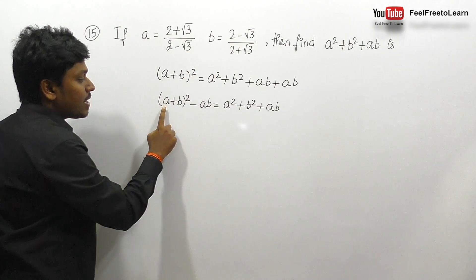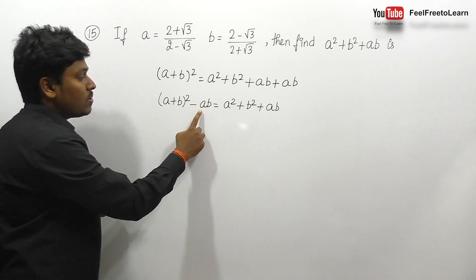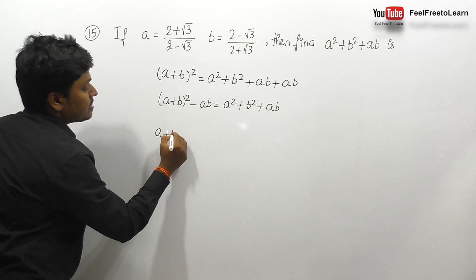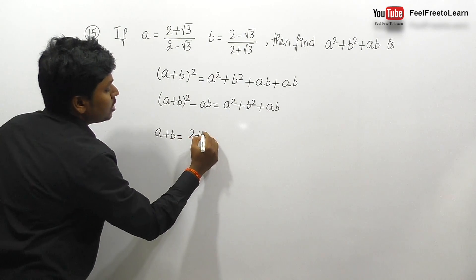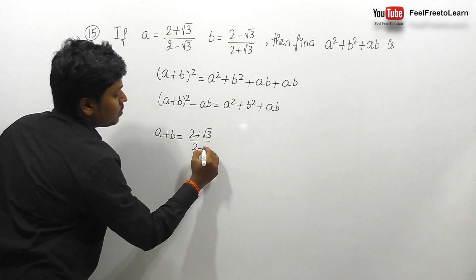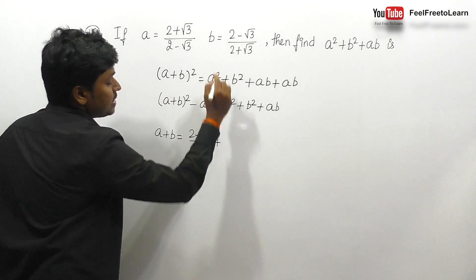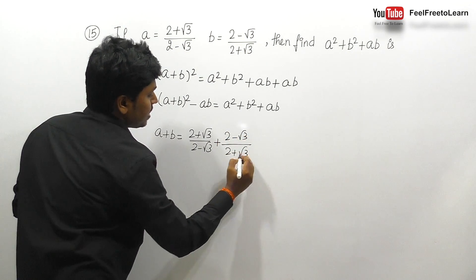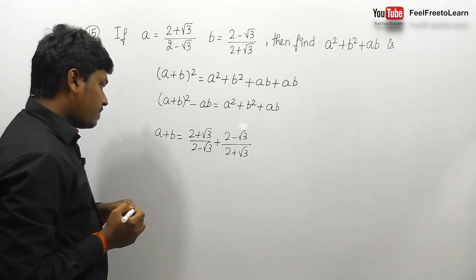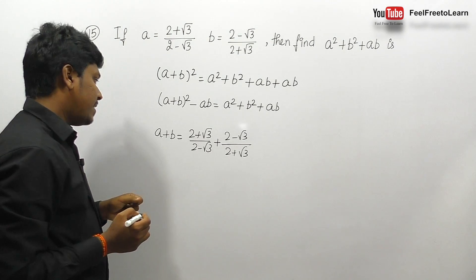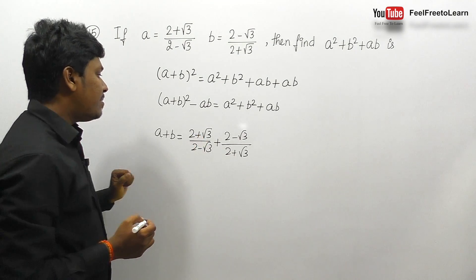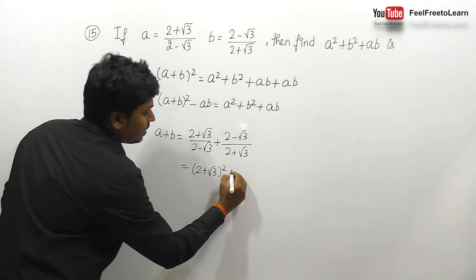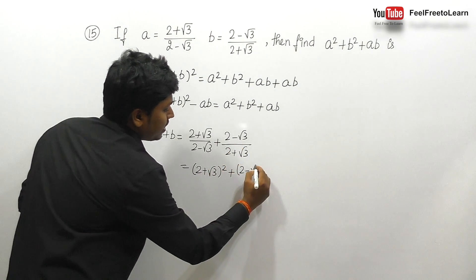Our target is to find a+b and a×b. First, let me find a+b: a+b = (2+√3)/(2-√3) + (2-√3)/(2+√3). Taking LCM, the numerator becomes (2+√3)² + (2-√3)².